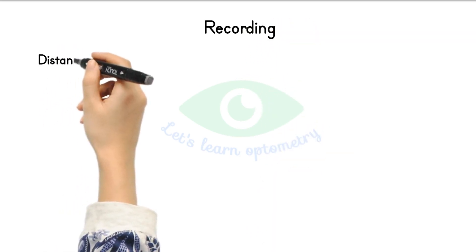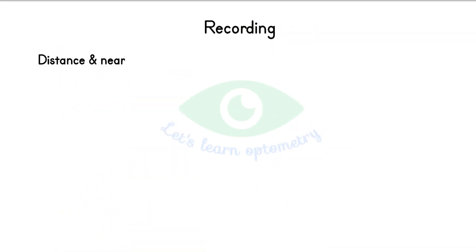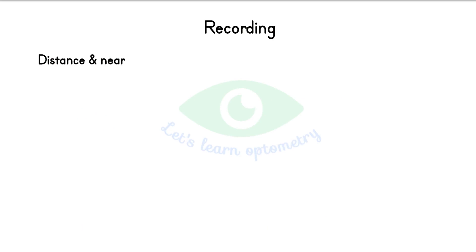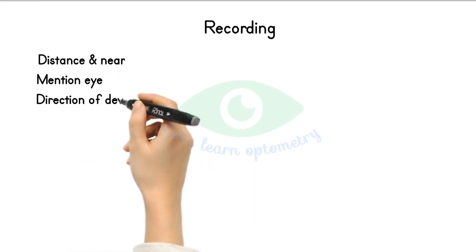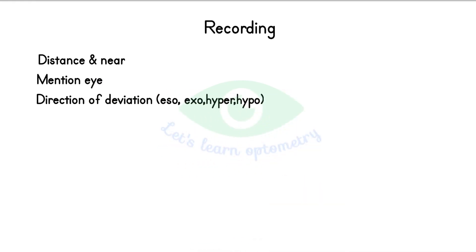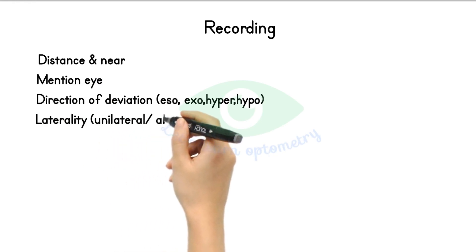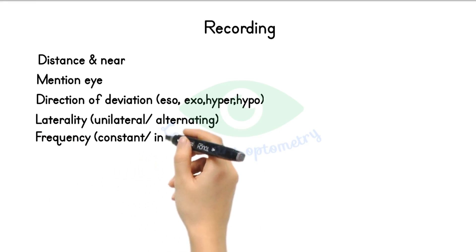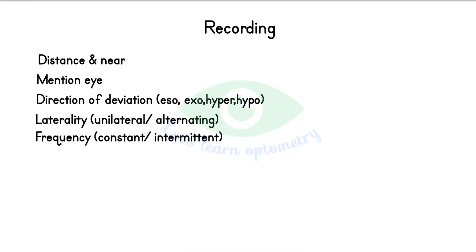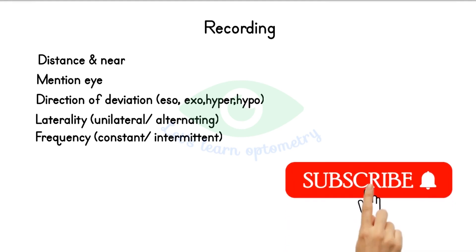Recording the results: record the distance at which the cover test was performed, whether distance or near. Mention the eye which has the deviation, the direction of deviation such as eso, exo, hyper, or hypo, and the laterality — unilateral or alternating. Also mention the frequency of deviation, whether it is constant or intermittent. I hope you find this video helpful — subscribe to Let's Learn Optometry for more optometry and IK videos.